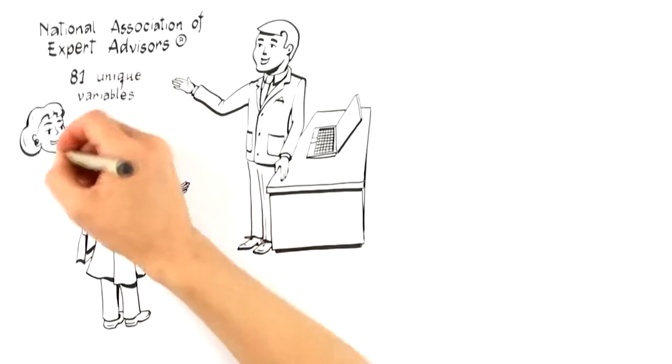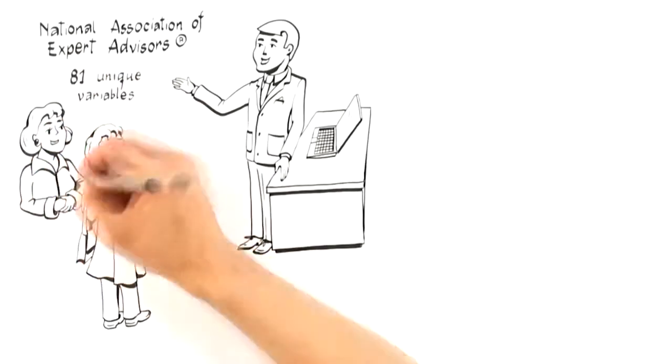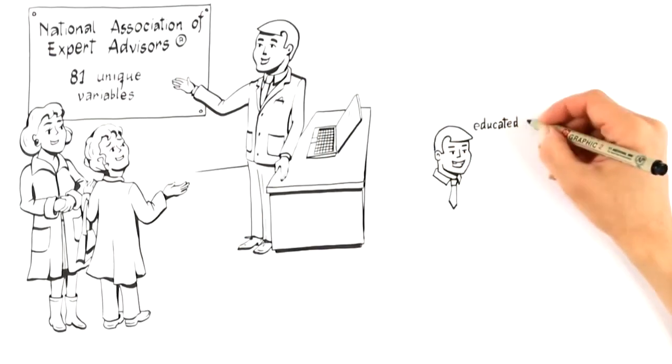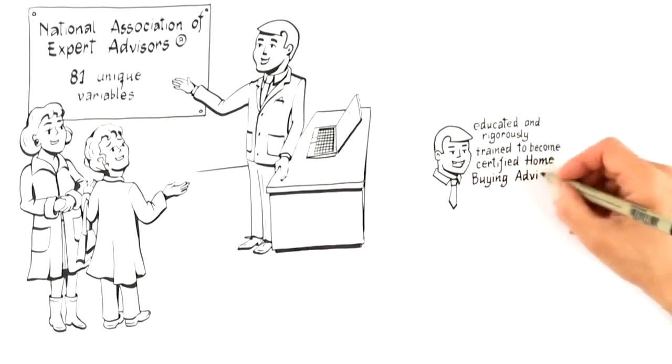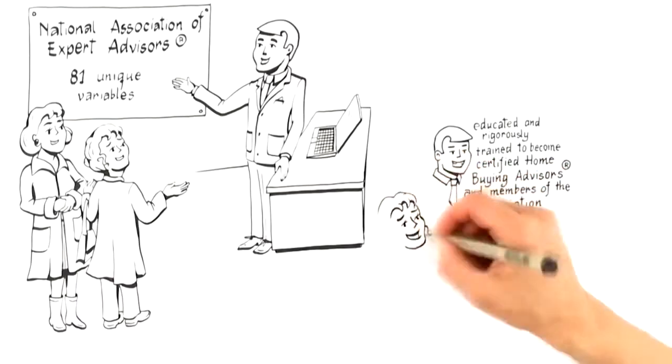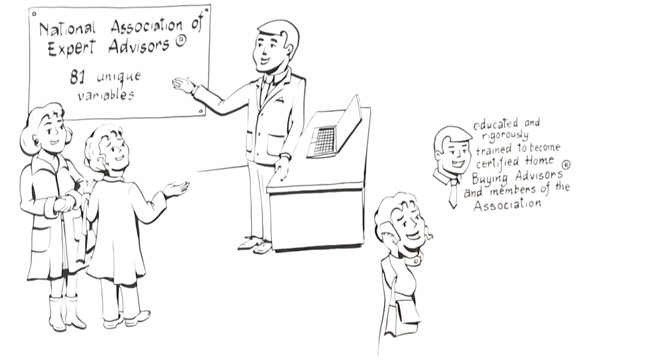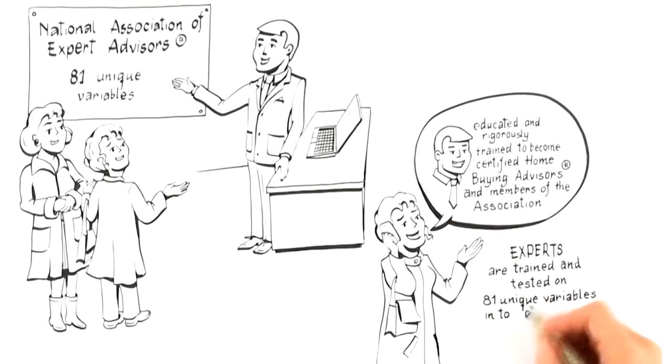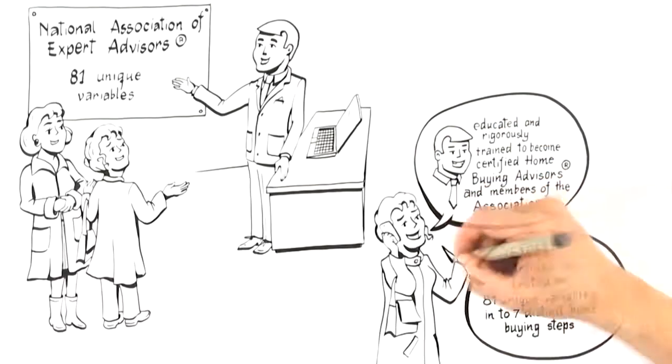Members of this organization are educated beyond your average agent. These professionals rigorously train to become certified home buying advisors by demonstrating their mastery of the home buying process. These experts are trained and tested to follow a proven, repeatable home buying system that categorizes the 81 unique variables into 7 distinct home buying steps to give you an unfair competitive advantage in today's new real estate economy.